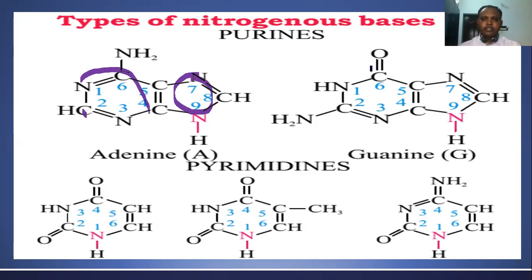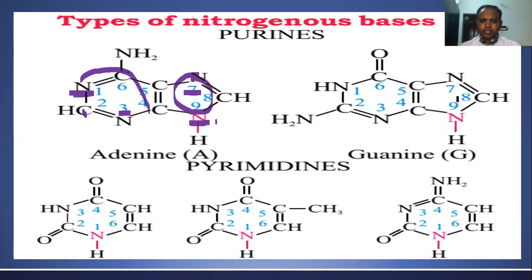In purine bases, the nitrogen atoms are present at position number one, three, seven, and nine — totaling four nitrogen atoms. This is the structure of adenine and the structure of guanine. The difference between adenine and guanine is: at the sixth carbon, adenine contains an amino group, whereas in guanine the sixth carbon contains an oxygen atom and the second carbon contains an amino group.